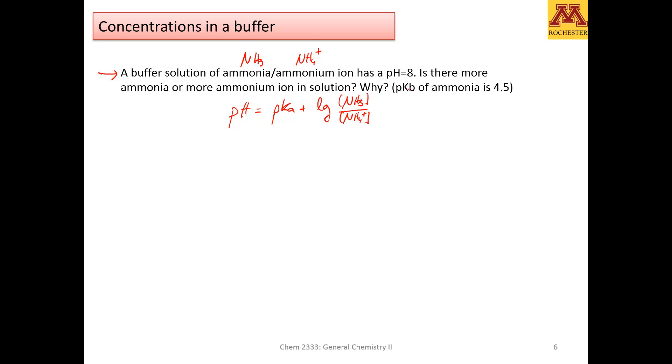The pKa of the acid can be calculated by just subtracting the pKb from 14. Subtracting 4.5 from 14, that's 9.5.